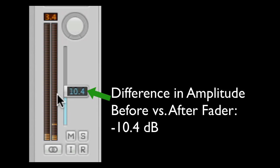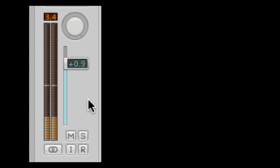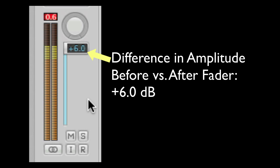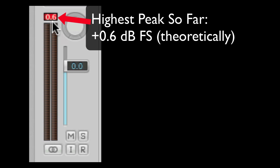If we change the fader, now it's at negative 10.4 — the signal is being attenuated by 10.4 dB. Attenuated means reduced in amplitude by that much; you could also call that negative gain. Or we can boost it — add a positive number. We could go up to around 3 or so decibels before we hit clipping. Now we're in danger of clipping — the meter is now in red at 0.6, meaning the signal tried to go 0.6 dB over full-scale, and obviously it can't. So that tells us that in order to avoid that, we would have needed to drop the fader back down again.